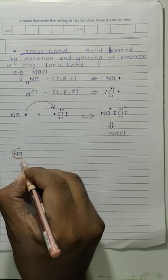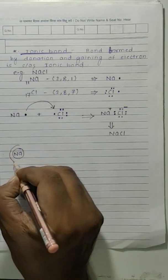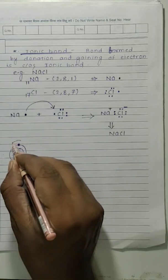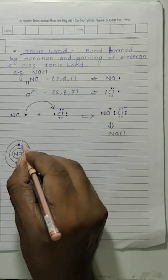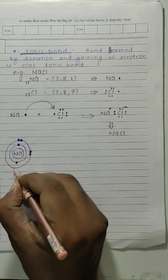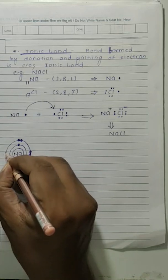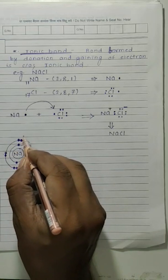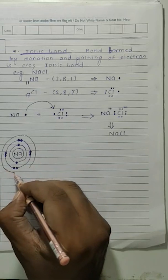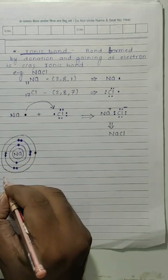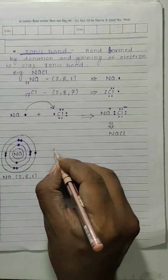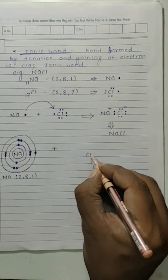Look here at sodium: first orbit has two electrons, second orbit has eight electrons, and the third orbit — that is the last one — has one electron. So sodium's configuration is two eight one. Sodium is going to combine with chlorine.